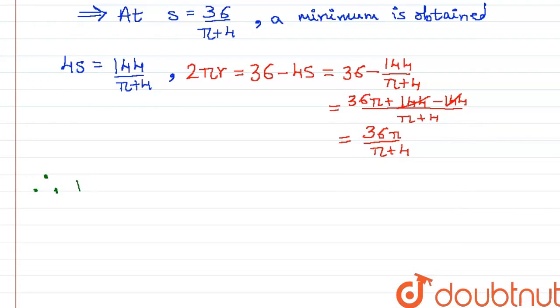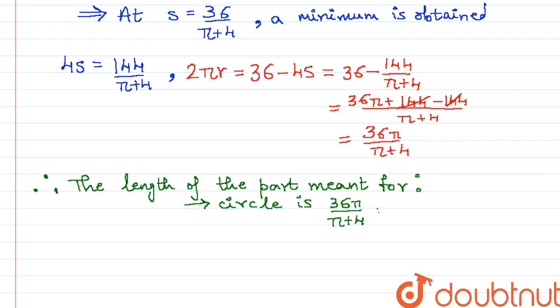Henceforth we can conclude that the length of the part of the wire meant for the circle is 36π/(π plus 4) meters, and that part meant for the square is 144/(π plus 4) meters.